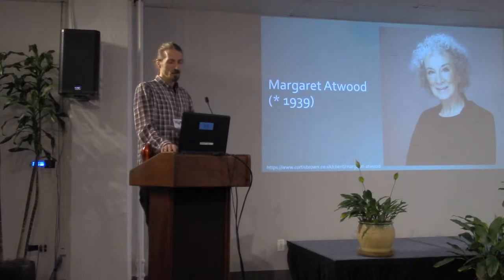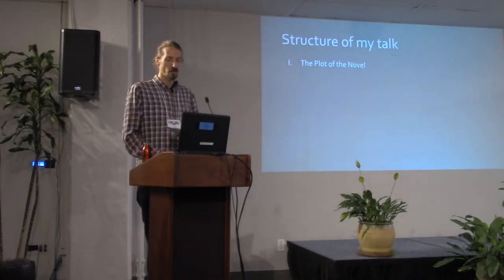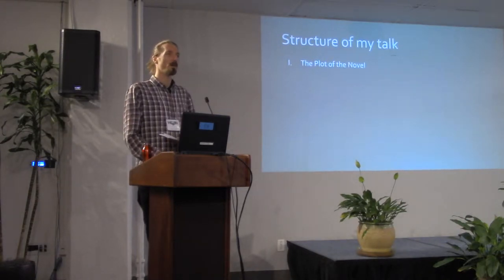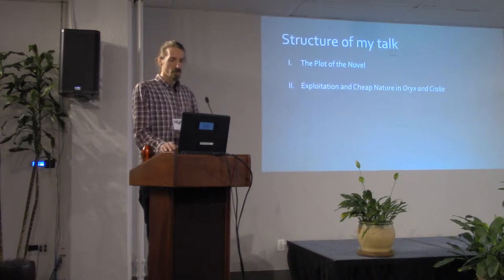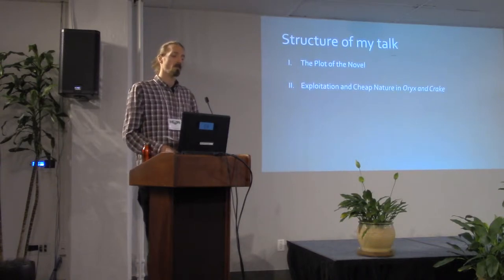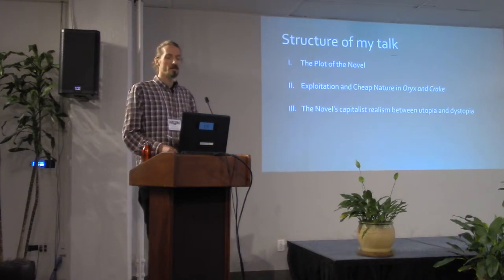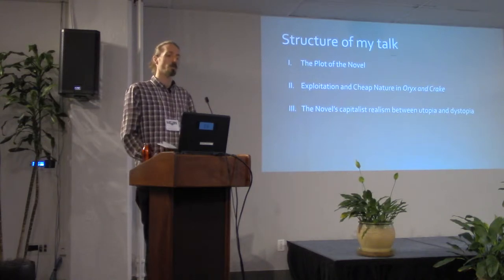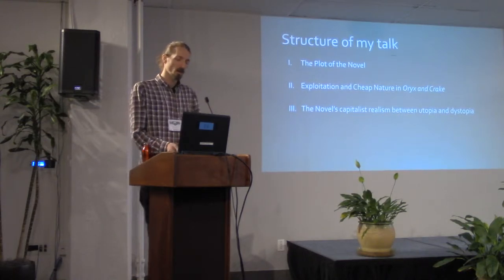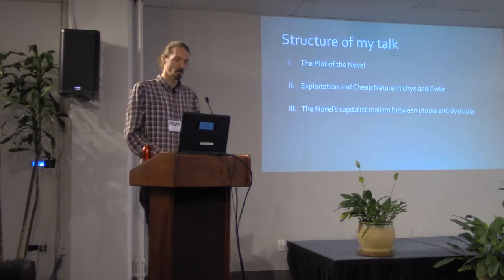Before I get into it, let me give you a brief overview of the structure of my talk. Firstly, I will outline the plot of the novel for those unfamiliar with it. Secondly, I will talk about exploitation and cheap nature and how they're represented in Oryx and Crake. And lastly, I will talk about the novel's capitalist realism between utopia and dystopia — the way in which there is a utopian dystopianism or dystopian utopianism, however you want to turn it.